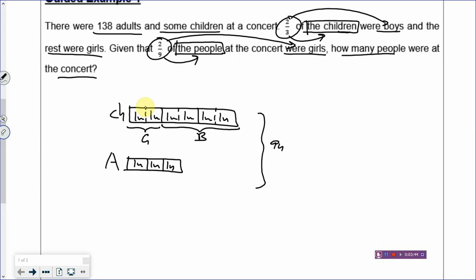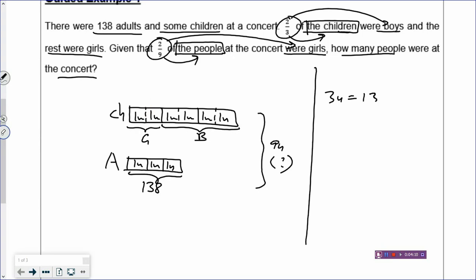So then you go back to the first sentence — what you could not draw before, now you can add to the model. There were 138 adults. How many people were there at the concert? That's your question mark. Let's work it out. If the model is good, you don't need to re-read the question. The adults have three units, which equals 138. So one unit is 138 divided by 3, which gives 46. All the people altogether have nine units, so you have 46 times 9, which gives 414 people.